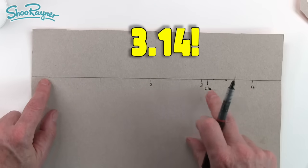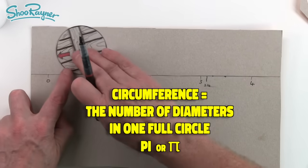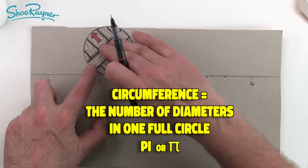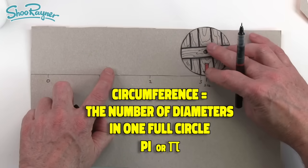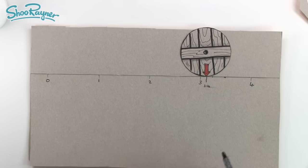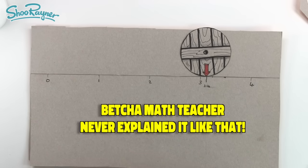And that is where the number pi comes from. It's the number of diameters it takes for the wheel to travel around one full cycle. No one ever told me that at school. If they'd have told me that I would have understood.